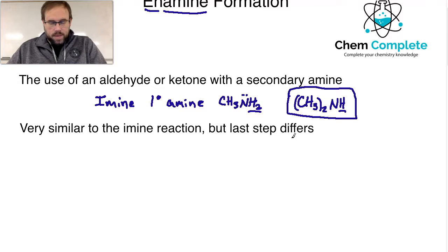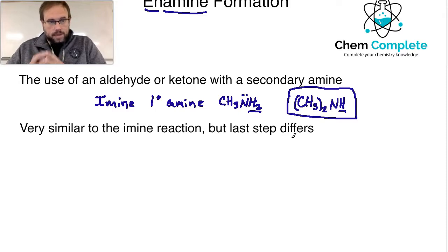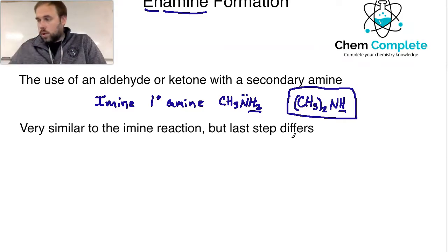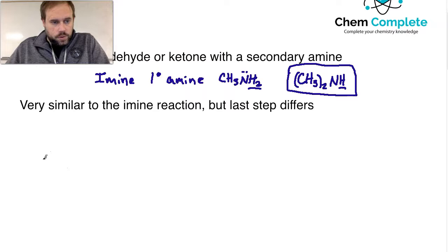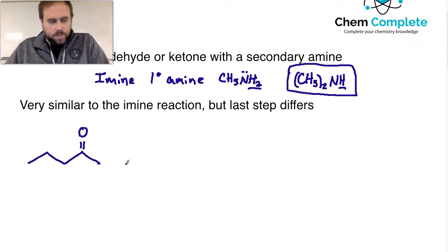If you haven't seen the imine formation, I'd encourage you to go back to the prior video on aldehydes and ketones. If you are comfortable with that, the good news is that this reaction is almost identical — it's the very last step that causes a change in the product, and it really has to do with the lack of a hydrogen on the nitrogen group in that final step. So let's go ahead and create a basic ketone — we'll do 2-pentanone. This reaction is in equilibrium, like many aldehyde/ketone reactions tend to be.